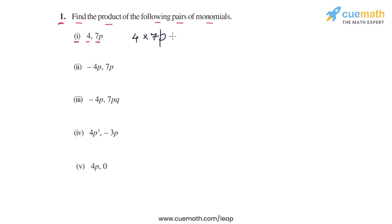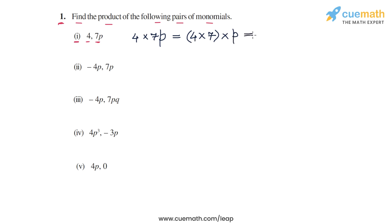So we can multiply the coefficients separately. 4 is the coefficient of the first term and 7 is the coefficient of the second term, so 4 into 7. Then we multiply the variable parts separately — there's no variable part in the first term 4, but in the second term we have p. So 4 into 7 is 28, and 28 into p is 28p. So this is the answer for the first part.